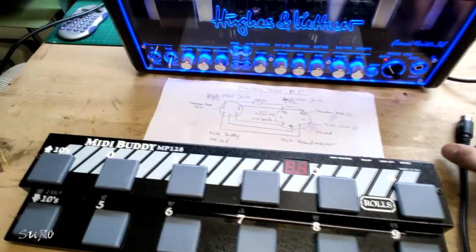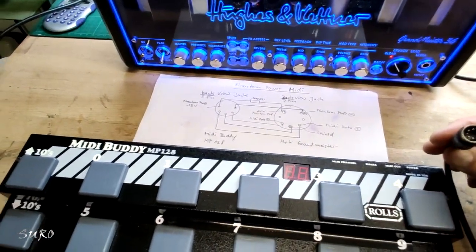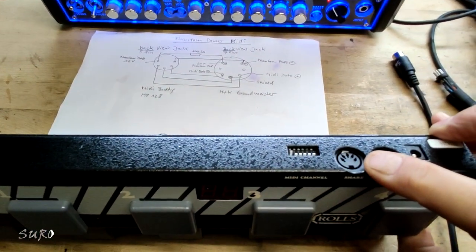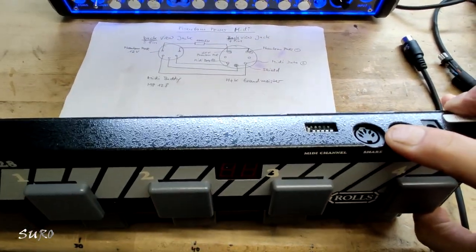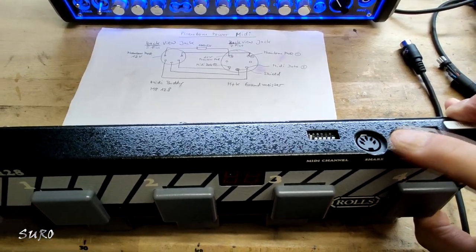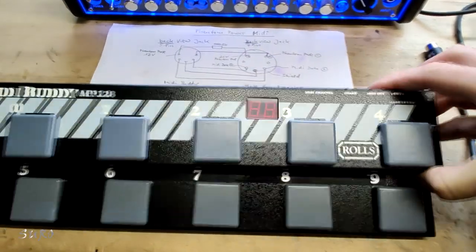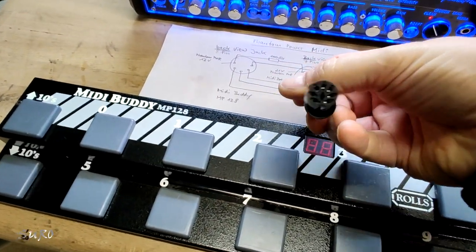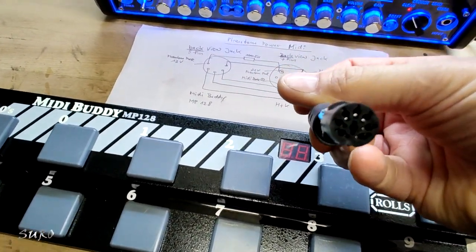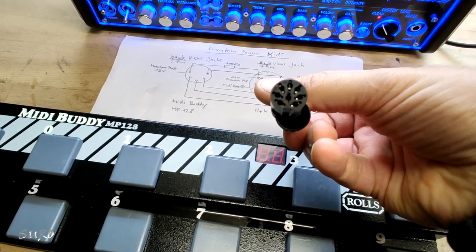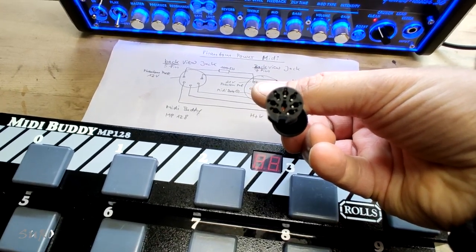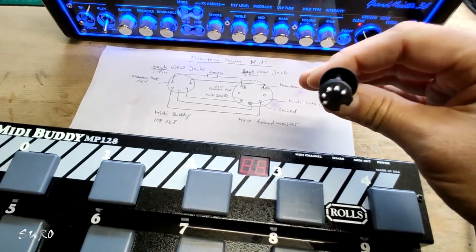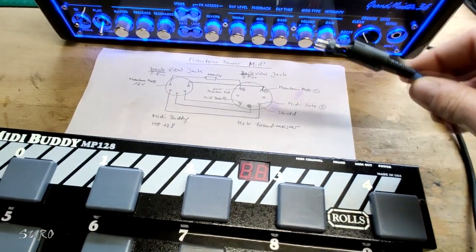The original idea was using the 7-pin and building in a 7-pin jack right here, which I didn't want to do. So we left the 5-pin there, and what I did is made up an adapter which brings the 7-pin female jack into a 5-pin jack which goes then into the Rolls MIDI Buddy.